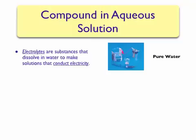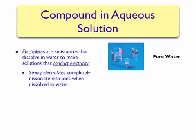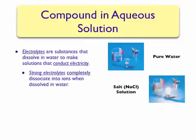Pure water contains no electrolytes and therefore does not allow the light bulb to light up. We can separate electrolytes into two categories. Strong electrolytes completely dissociate into ions when dissolved in water. Sodium chloride is a strong electrolyte — it completely dissociates into sodium ions and chloride ions. Since there are a large number of ions in solution, the light bulb lights up very brightly when connected to a circuit.